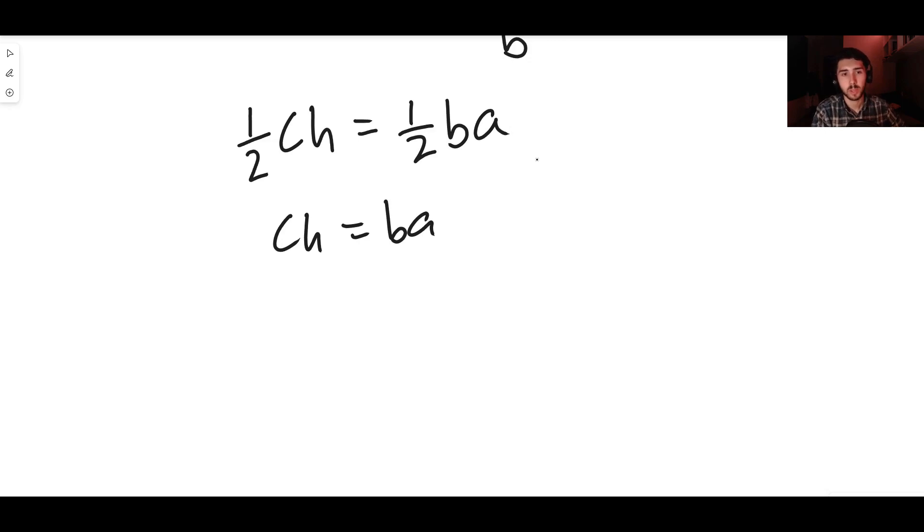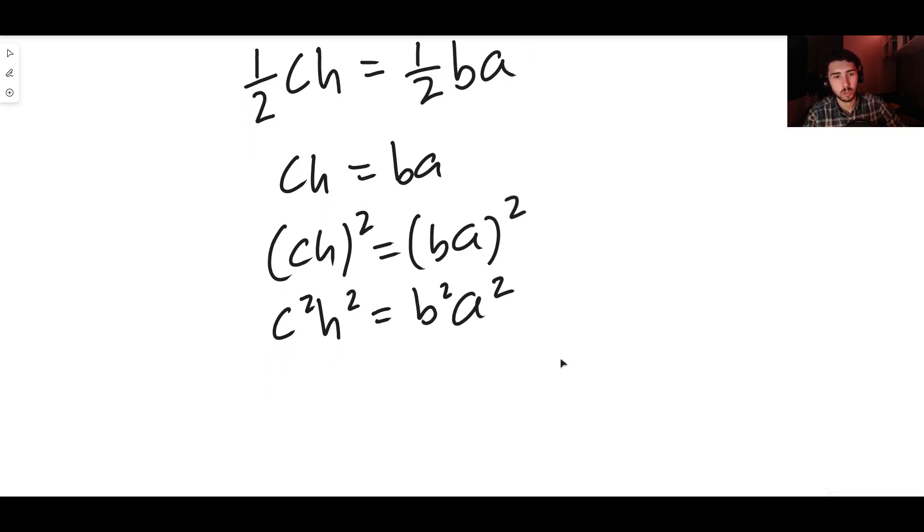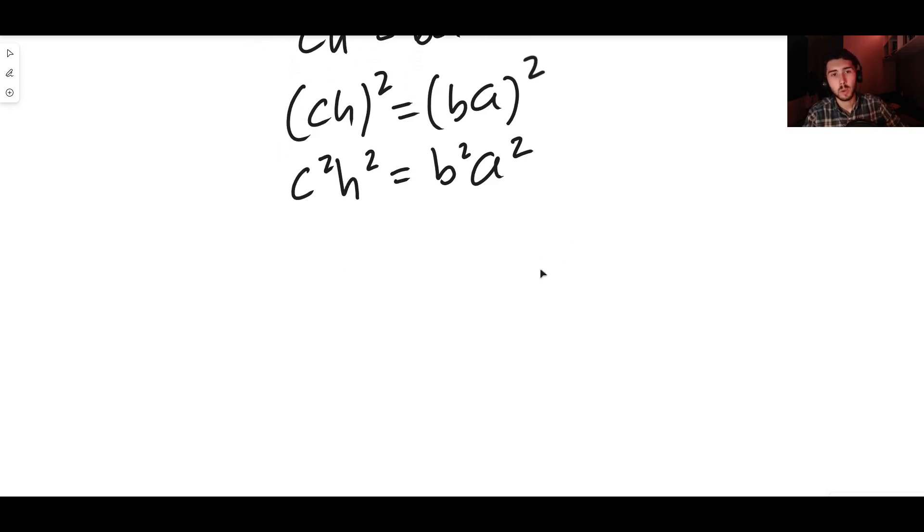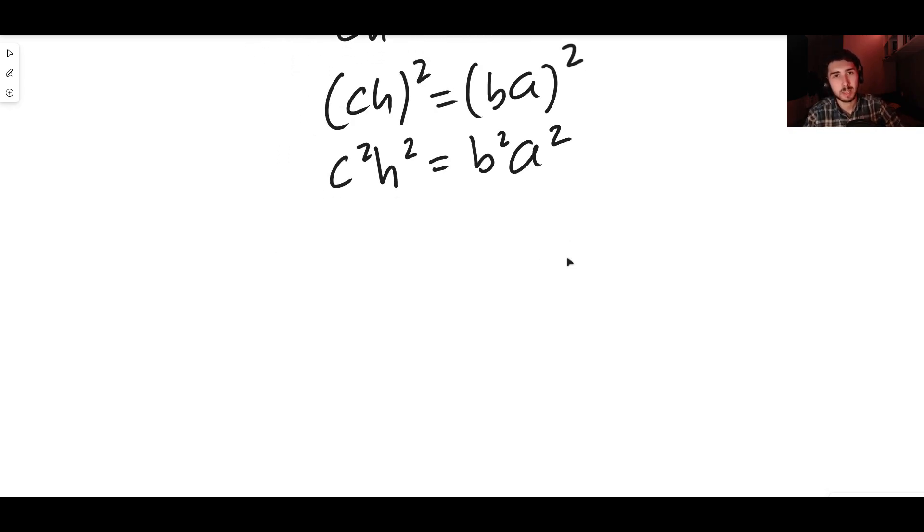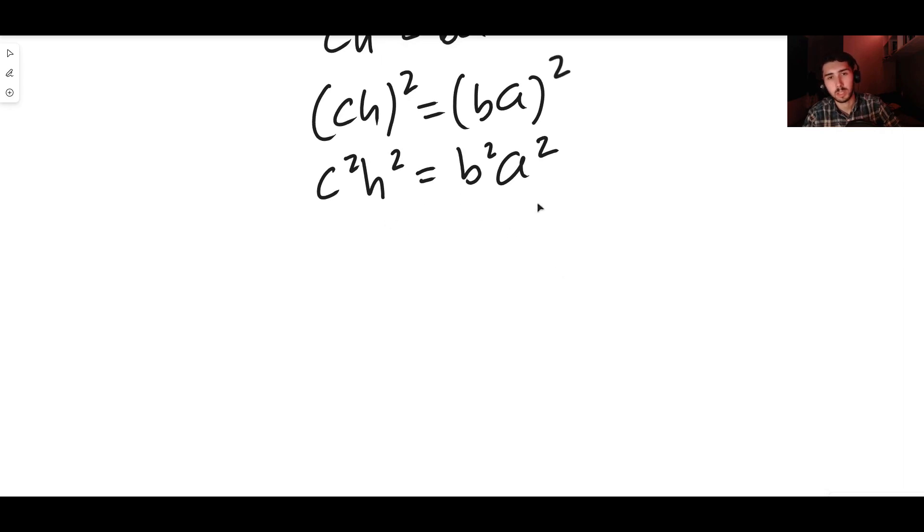Okay, if c times h is b times a, we just times both sides by two. We can square both sides: we get ch squared equals ba squared, meaning that c squared times h squared is equal to b squared times a squared.